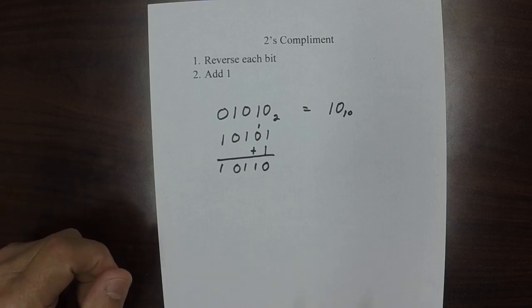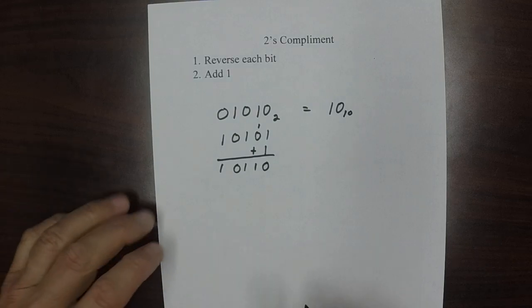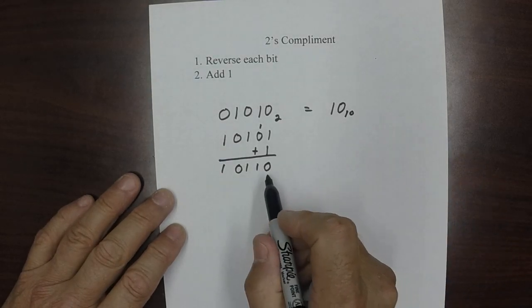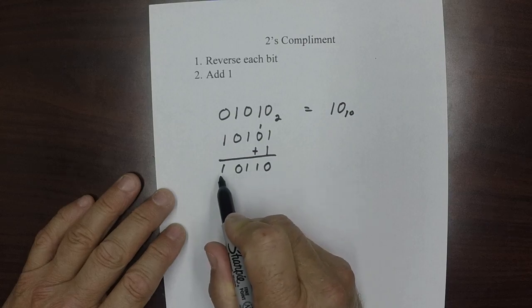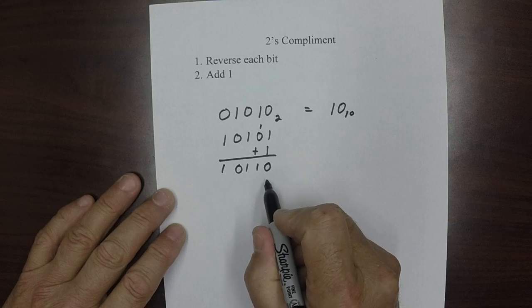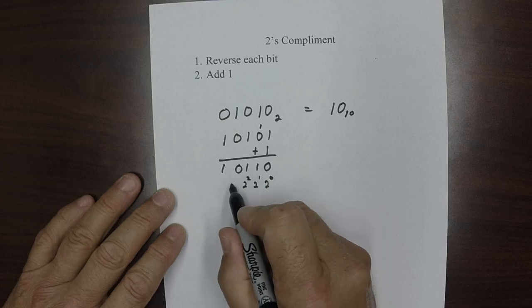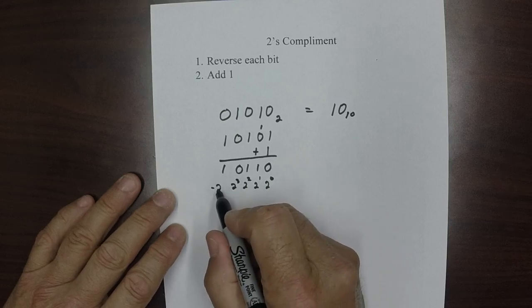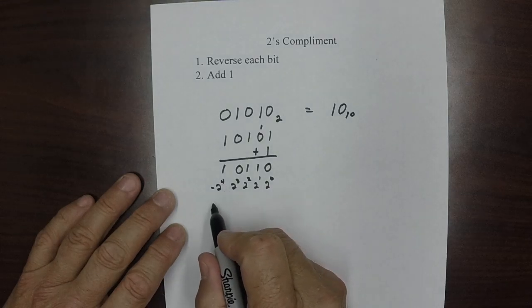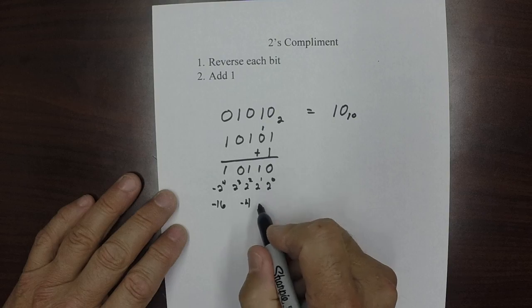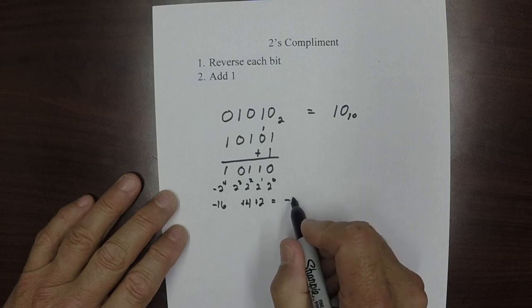Now, how do we know that that's a negative 10? Well, the way we evaluate this, it's actually rather clever. Each one of these takes on its value, but the sign bit takes on its negative value. So this would be 2 to the 0, 2 to the 1, 2 to the 2, 2 to the 3, and this would be negative 2 to the 4th. So this was actually negative 16, one right here, negative 4, and then this would be a positive 4, and this would be a positive 2. So we add those together, and it's a negative 10.